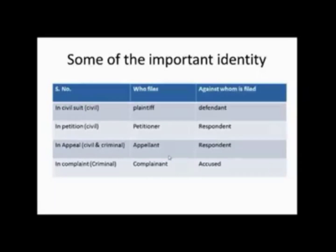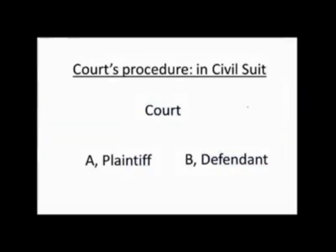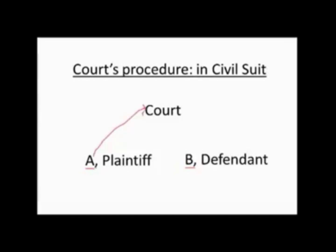These are the names of persons we use when writing a plaint, written statement, appeal, or complaint. Now let's understand the general procedure for filing a plaint and written statement. Say there are two parties, A and B. A wants to file a suit against B. A first gives a notice to B through his advocate stating he intends to file a suit. If B does not reply or does not provide the relief A wanted, A is free to go to court and file a plaint.